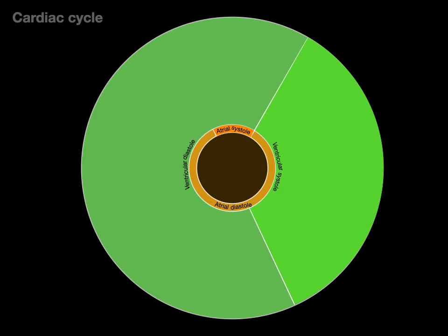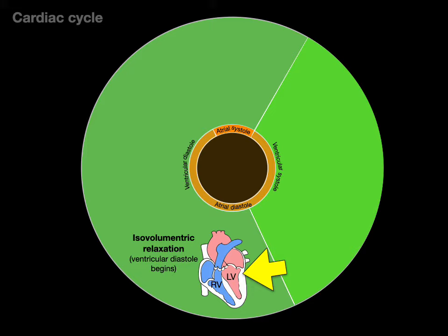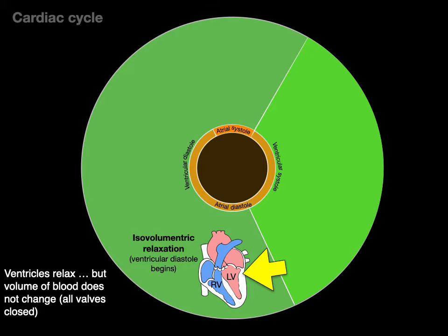We'll start at isovolumetric relaxation, which is the beginning of ventricular diastole. It's called isovolumetric relaxation because as the ventricles relax, the volume of blood does not change. All valves are closed because the pressure in the ventricles is still greater than the atria, so blood isn't coming down from the atria, and the pressure isn't great enough to push blood into the aorta or pulmonary trunk. Iso means the same volume.